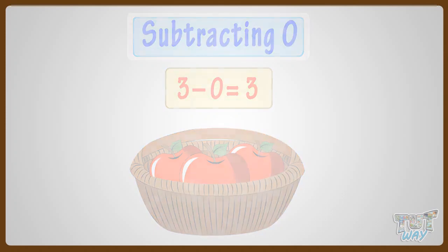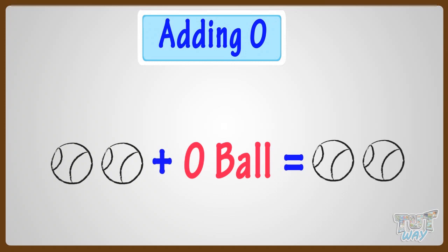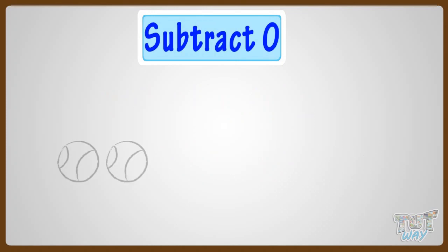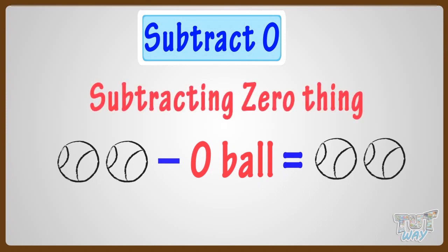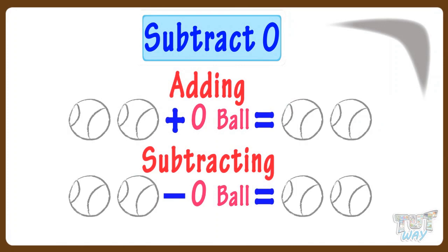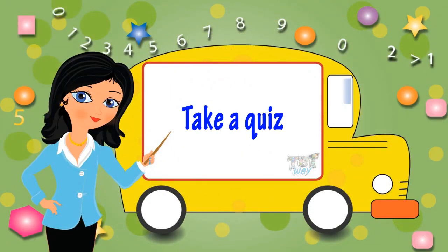So, what have we learned? We have learned that when we include no more things in a set of things, we say we are adding 0 things, and the number of things remain the same. And when we remove nothing from a set of things, we say we are subtracting 0 things, and the number of things remains the same. So, adding or subtracting 0 things does not change the number of things. Now you may go ahead and take a quiz to learn more. Bye-bye!